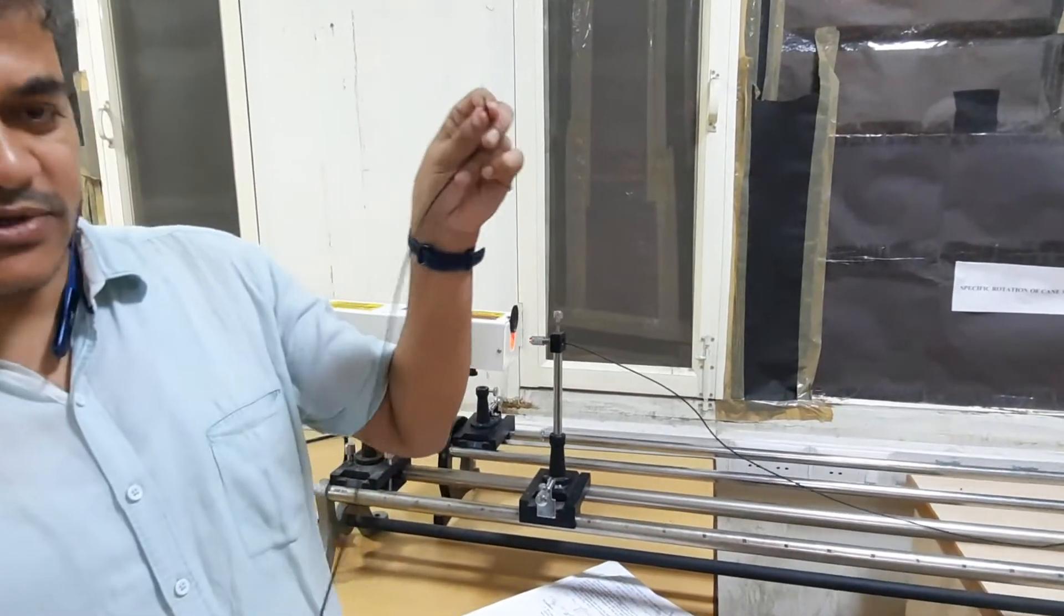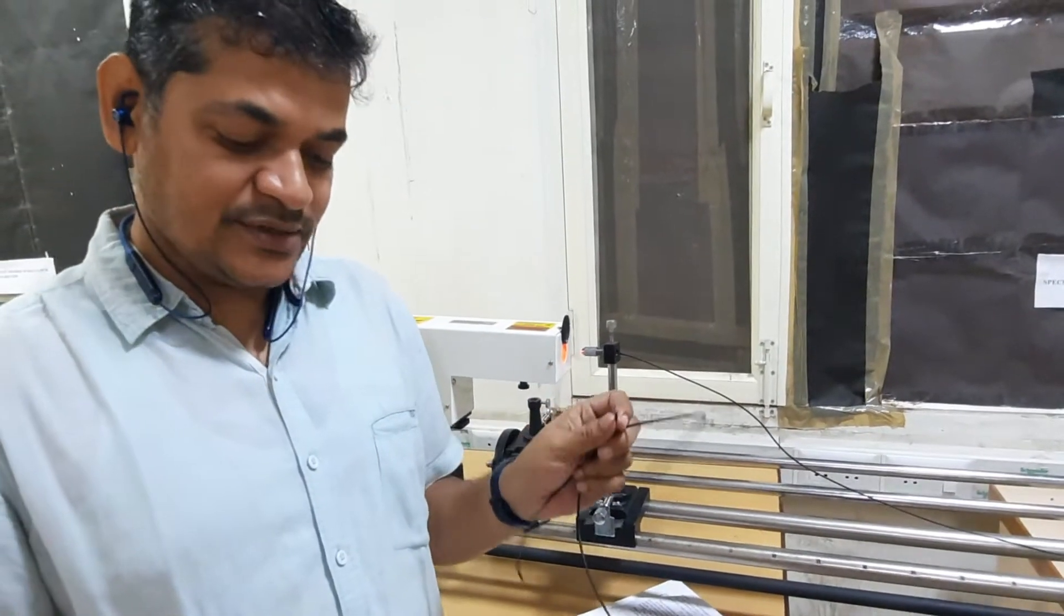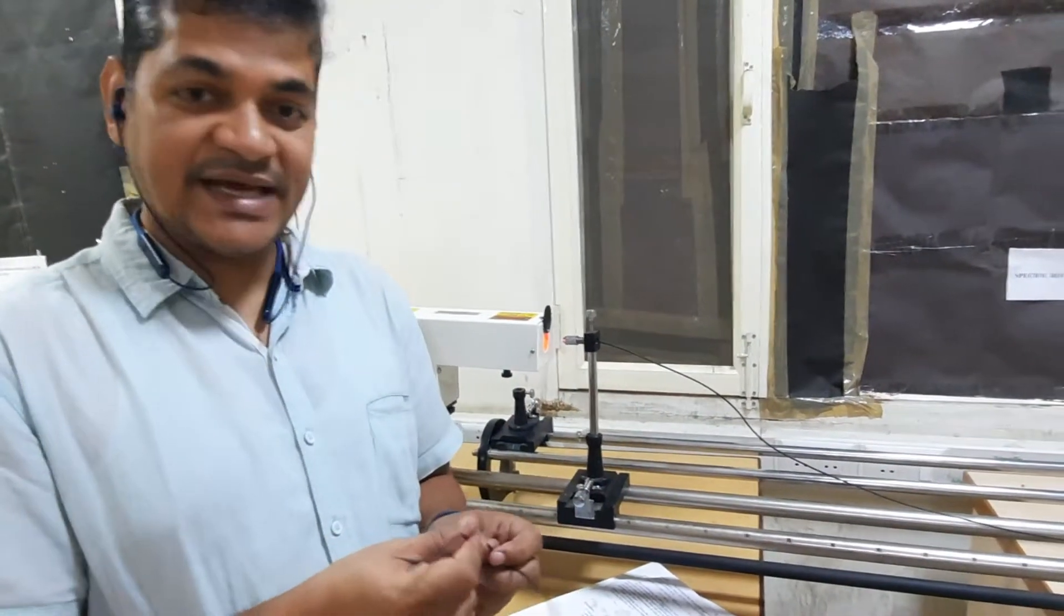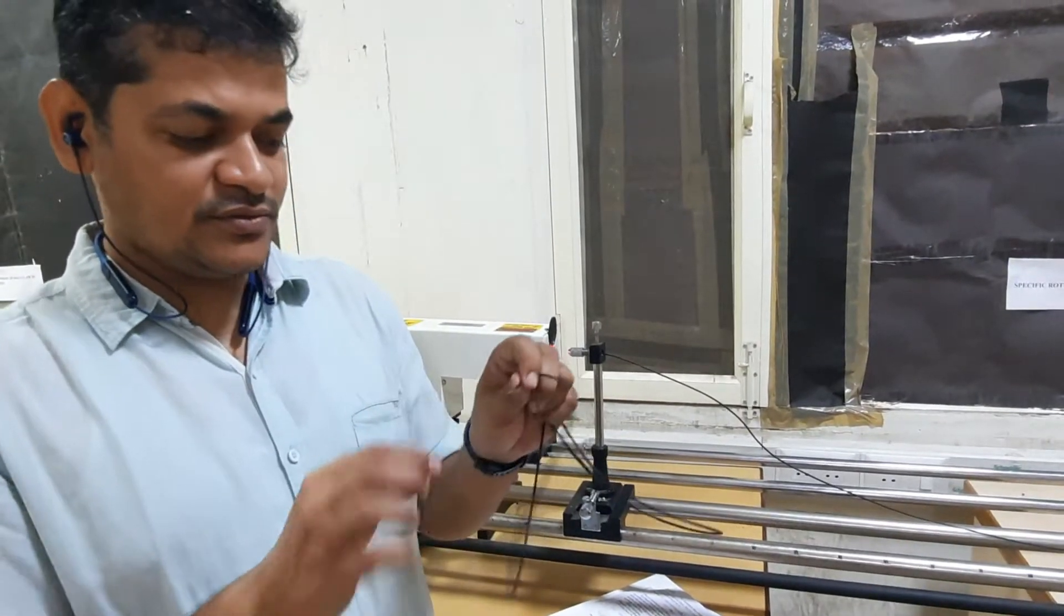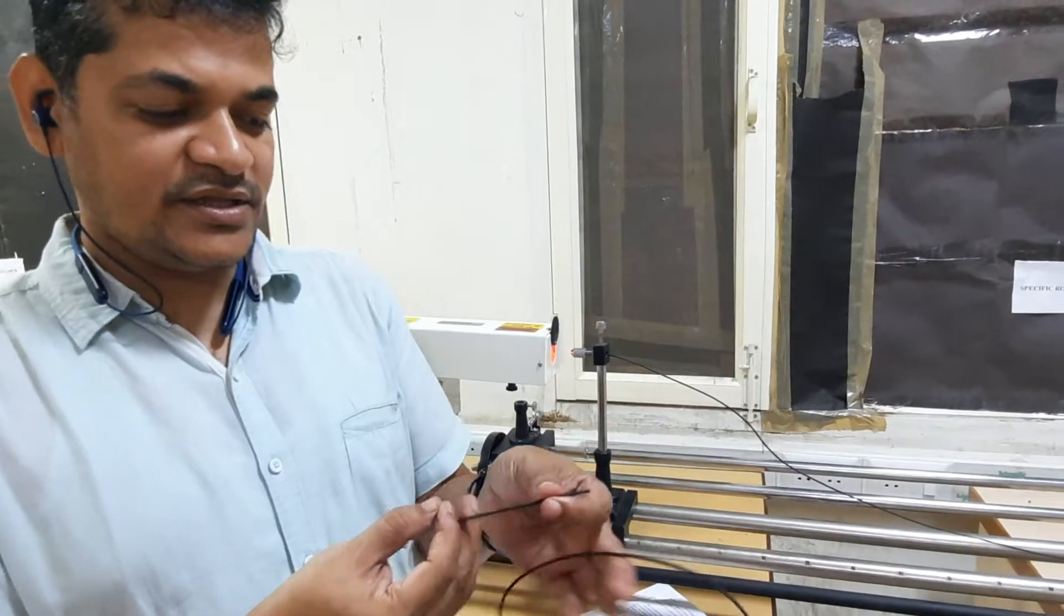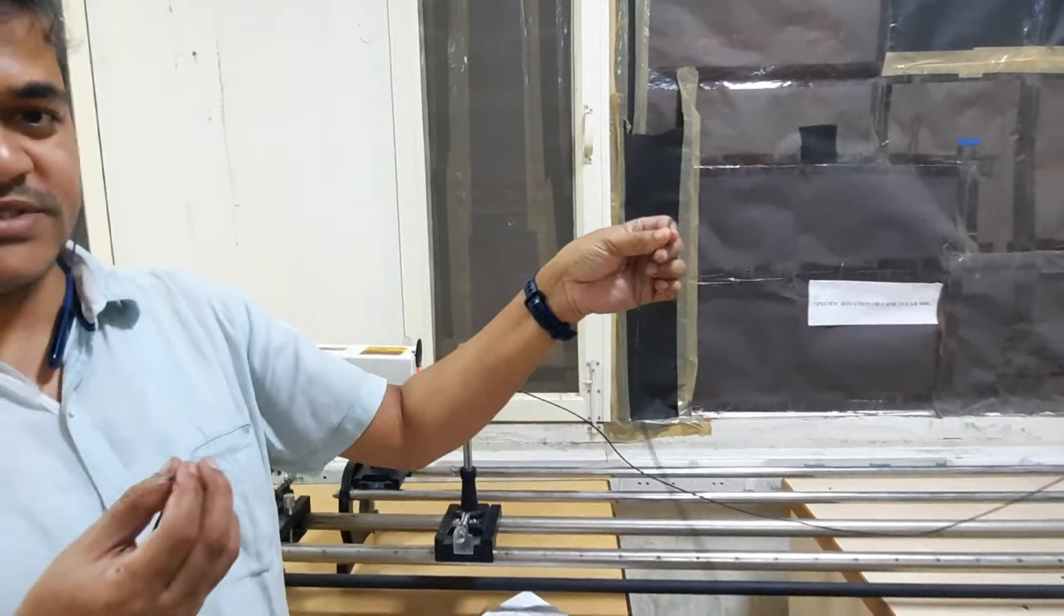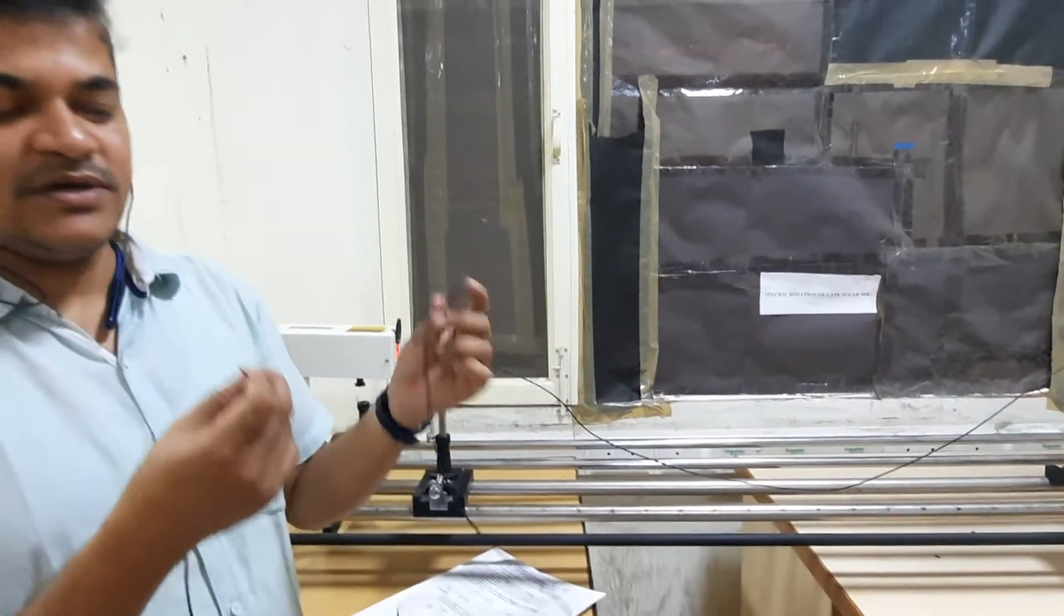The fiber optic cable is used to transmit data using light. So this part will be attached to a transmitter and this part, after a long distance, this part will be attached to the receiver where the data would be interpreted.